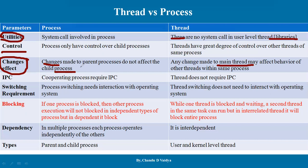This is also a difference: if there is an independent process, there is no effect on others. But generally, threads work independently or interdependently. If there is something in the main thread, there may be possibilities of impact. If cooperating processes require IPC, communication between two processes requires an IPC mechanism. Whereas if threads are independent, there is no IPC requirement and they run independently.